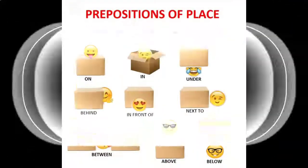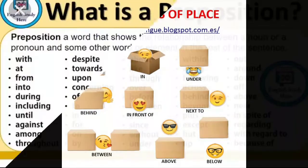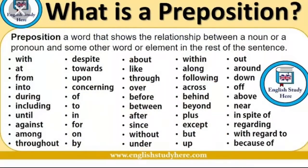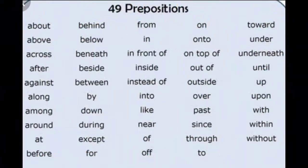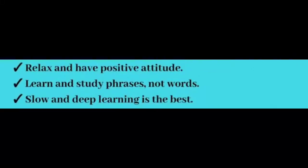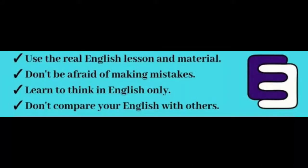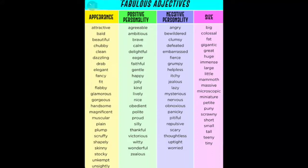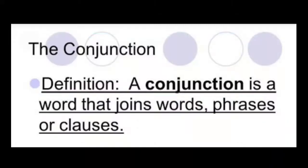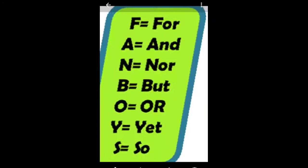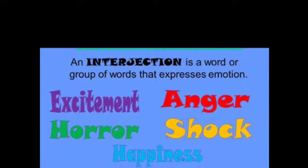Subject plus verb completes thoughts. A preposition is a word that shows the relationship between a noun or pronoun. An adjective tells you more about the noun. An adverb describes a verb, adjective, or another adverb. A conjunction joins two words, phrases, or even clauses. An interjection is a word that expresses emotion.